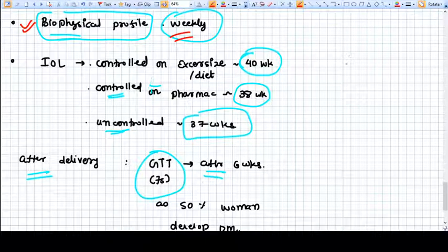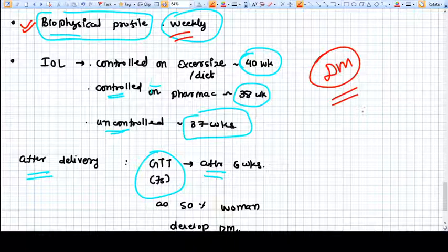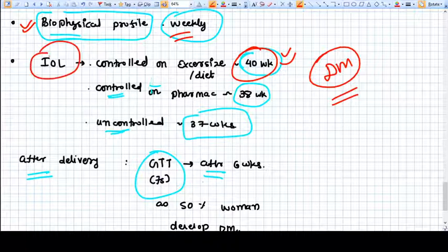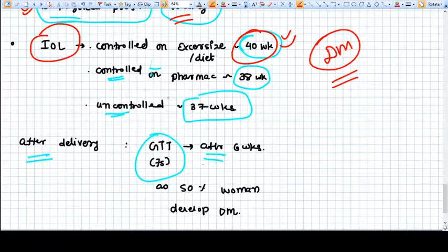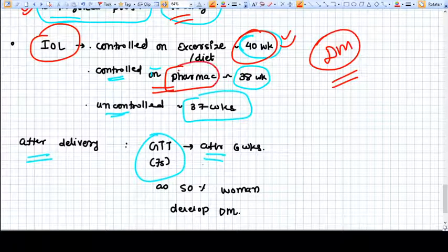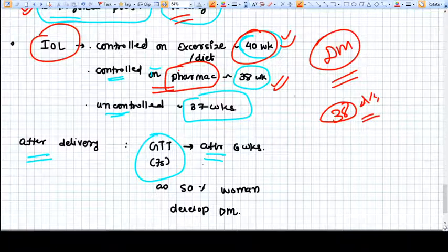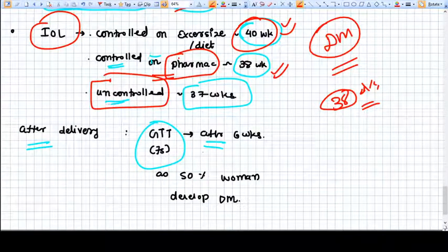In DM, we don't prolong the pregnancy because with prolongation, the risk of fetal demise becomes higher and higher. If diabetes is mild, controlled with exercise and diet, we should terminate pregnancy at 40 weeks with induction of labor. If diabetes is controlled on pharmacology like insulin, we induce at 38 weeks. If glucose levels are not well controlled, we should terminate pregnancy at 37 weeks.